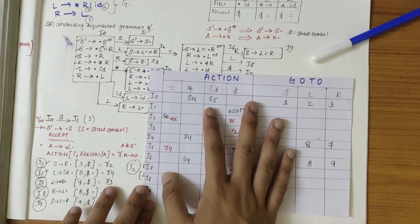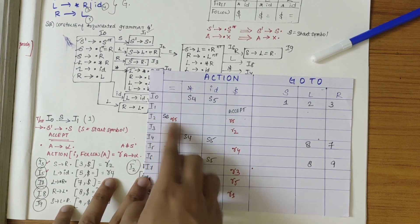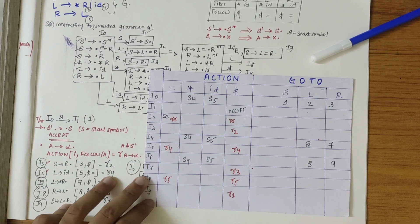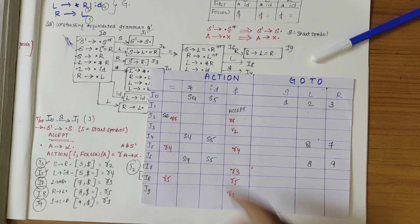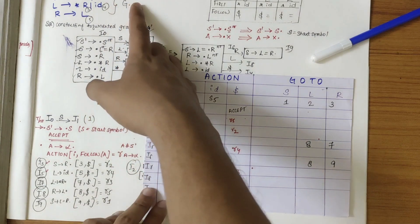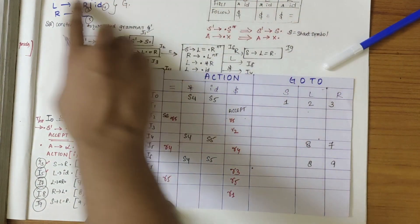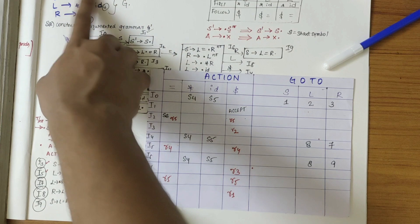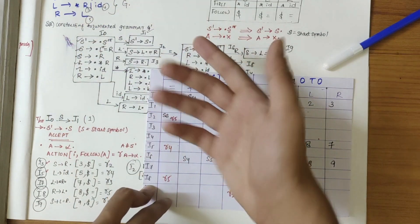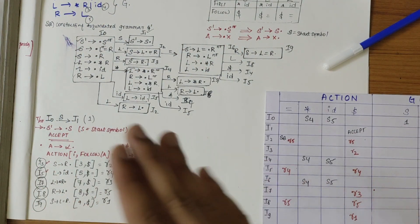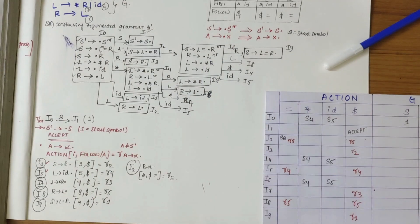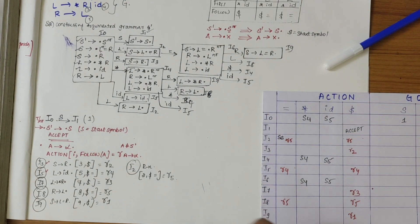If you look at the table, there is a shift-reduce conflict happening. In the case where there is a shift-reduce conflict, we can state that this particular grammar is not SLR. So, this particular grammar G is not an SLR grammar. I hope you have understood how to find the SLR parsing table of a given grammar. If you have any doubts, let me know in the comments and subscribe to my channel. Thank you.